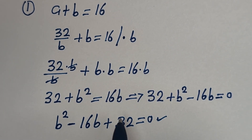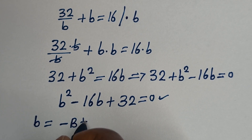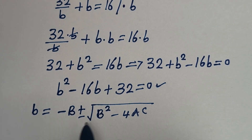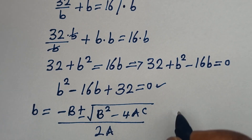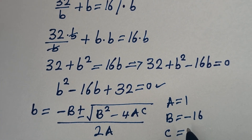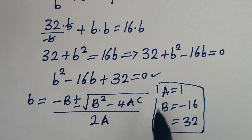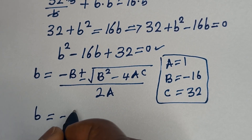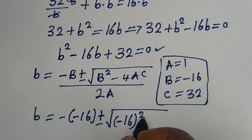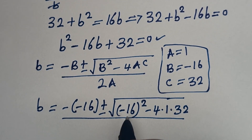This is a quadratic equation which can be solved using the quadratic formula. From the quadratic formula, B is equal to minus b plus or minus square root of b squared minus 4ac, over 2a. From this equation, a is equal to 1, b is equal to minus 16, and c is equal to 32.